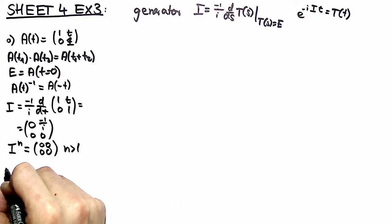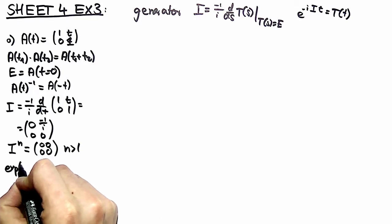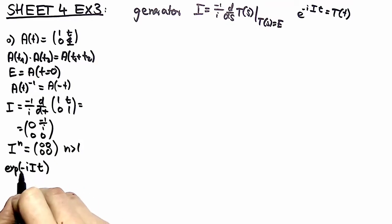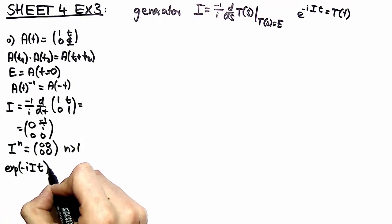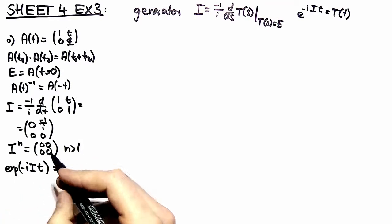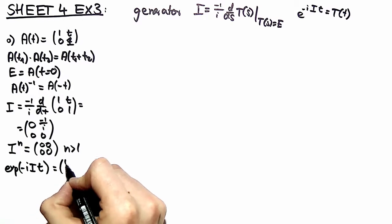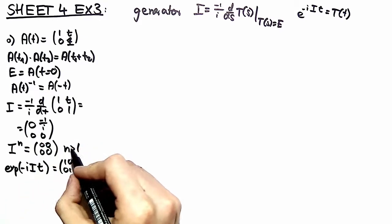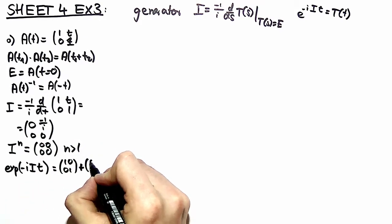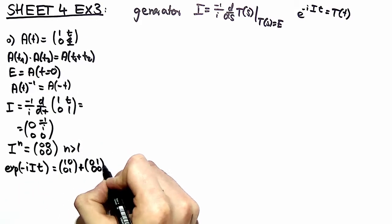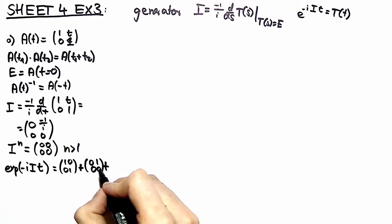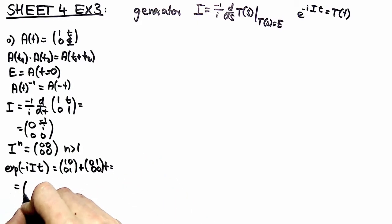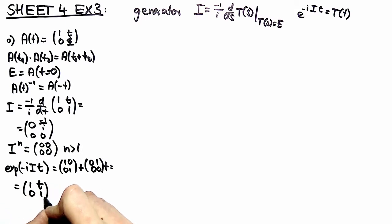So this is very easy then to compute the exponential of minus i times the generator times the parameter t. Because this is nothing else than the identity matrix plus our generator times the parameter t. And this is what you expect it to be, namely t in the upper right corner and 1s on the diagonal, A of t.